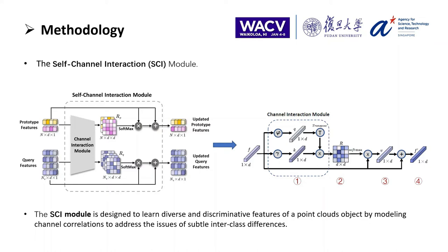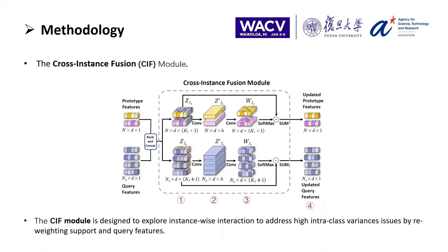Formally, query vector Q and key vector K are generated from the input feature F with two linear embedding functions. Then we can get the channel relation score map R with Q and K, and obtain the relative feature V. Finally, we combine V and F to get the updated feature. The CIF module is designed to explore instance-wide interaction to address the high interclass variance issue by leveraging support and query features.